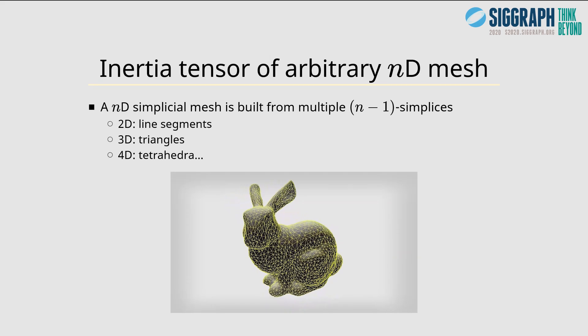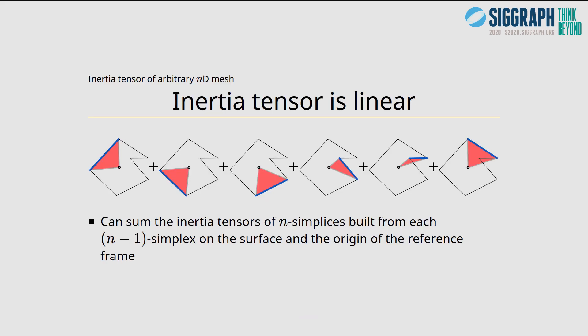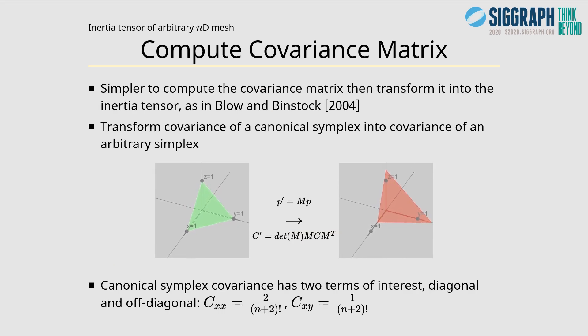Now how do we compute a specific inertia tensor for an arbitrary n-dimensional mesh? An n-dimensional simplicial mesh is built from multiple n-minus-1 simplices. In 2D a mesh would be built out of line segments, in 3D triangles, in 4D tetrahedra. The inertia tensor is linear, so we can compute the inertia tensor of an n-simplex between the origin and every boundary element, and sum the result together. But it's simpler to compute the covariance matrix first and transform it into the inertia tensor.